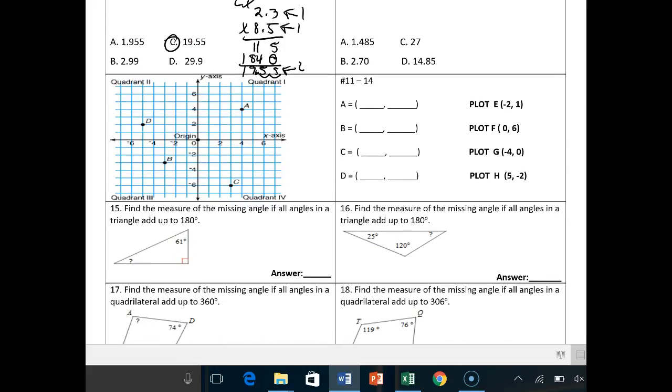11 through 14 are these coordinate problems. Remember, you move left, which is negative, or right first, then up or down to get to coordinates. So starting at the origin 0, 0, how do I get to A? I move right four times and up four times, so that's 4, 4. X value first, then the Y value. How do I get to C? I move right three times, then down negative 6. So that's 3, negative 6. You do B and D.